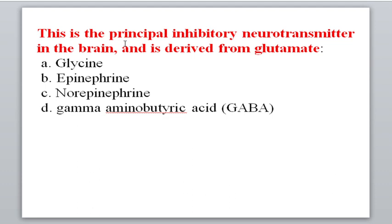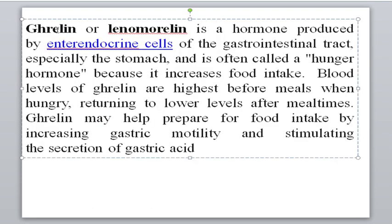Which is the principal inhibitory neurotransmitter in the brain and is derived from glutamate? There are two types of neurotransmitters: excitatory and inhibitory. Inhibitory neurotransmitters inhibit nerve signals from the synaptic terminal, while excitatory ones allow signals to pass. Many students confuse glycine and gamma-aminobutyric acid (GABA). The correct option is GABA, which is the inhibitory neurotransmitter derived from glutamate.